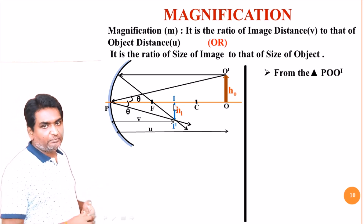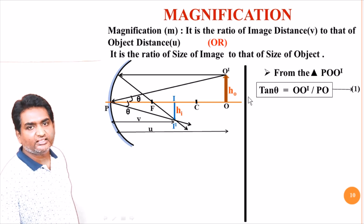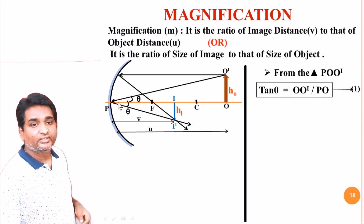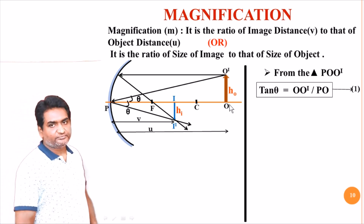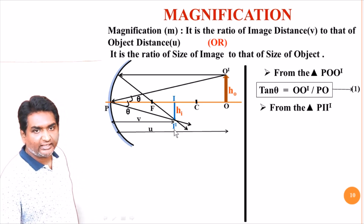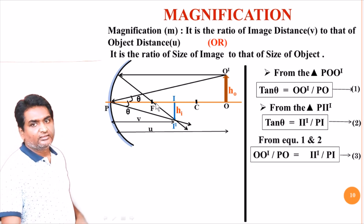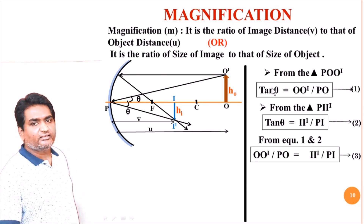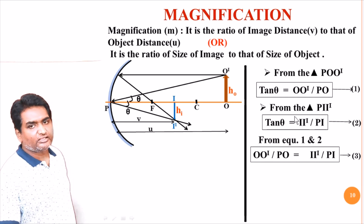Here we consider two triangles: triangle P-O-O-dash and triangle P-I-I-dash. These two triangles are similar triangles because P-I is parallel to P-O, and O O-dash is parallel to I I-dash. From triangle P-O-O-dash: tan-theta equals O O-dash divided by P-O. From triangle P-I-I-dash: tan-theta equals I I-dash divided by P-I. Since the angles are equal, it follows that O O-dash divided by P-O equals I I-dash divided by P-I.